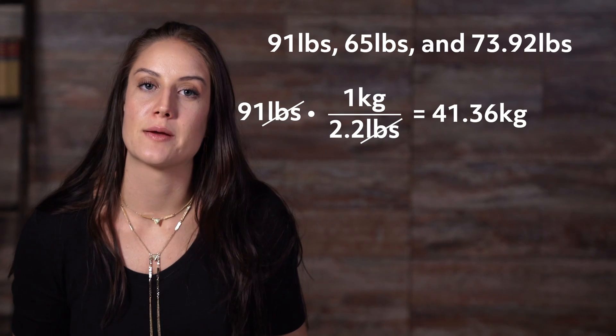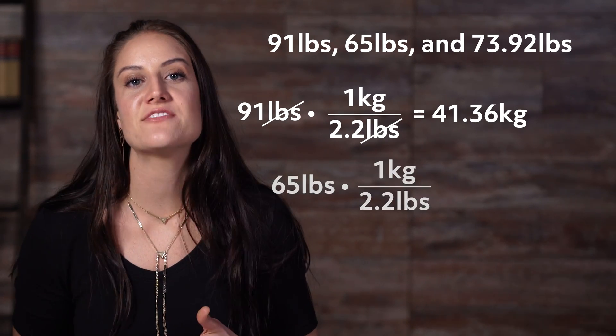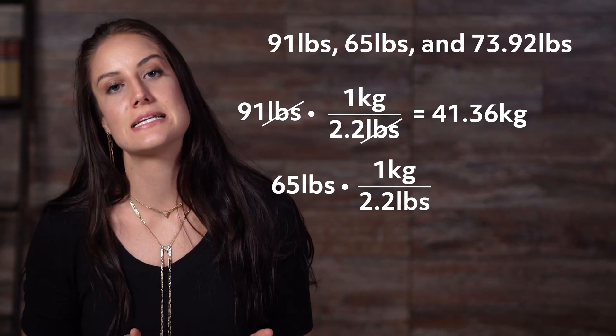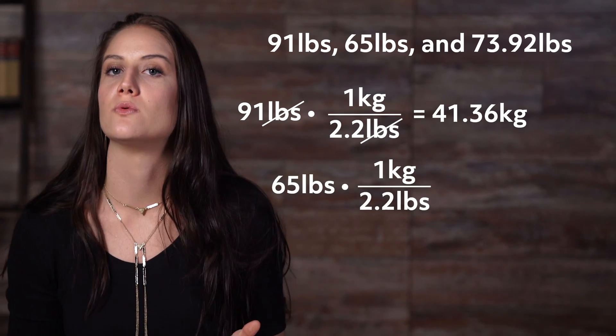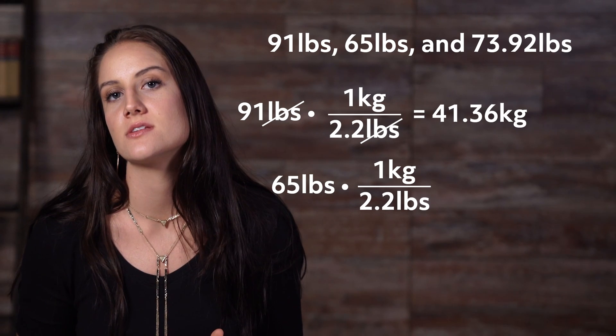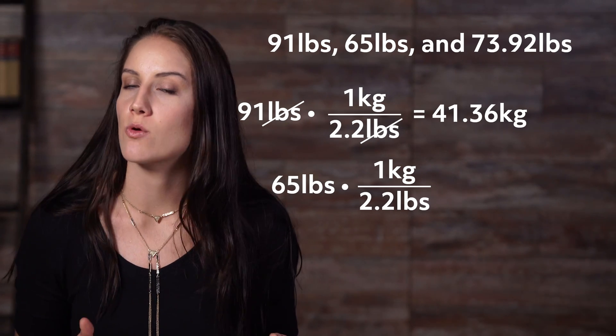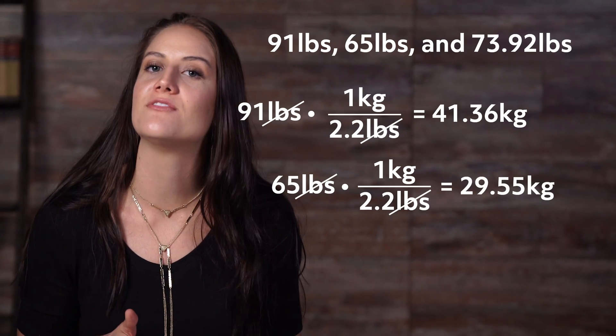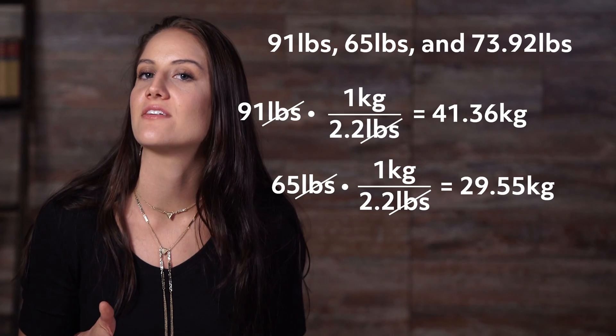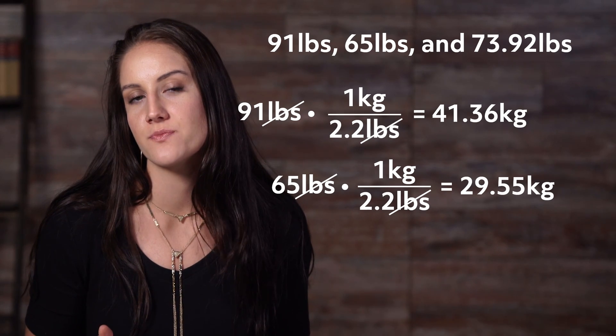Now, our second example: 65 pounds times 1 kilogram over 2.2 pounds. After we cross out our pounds, we're left with 29.55 kilograms.